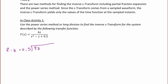First, I'm going to multiply by 4Z to the negative 1, which yields 4Z minus 4 plus 2Z to the negative 1. Then I'm going to subtract and have 4 minus 2Z to the negative 1.